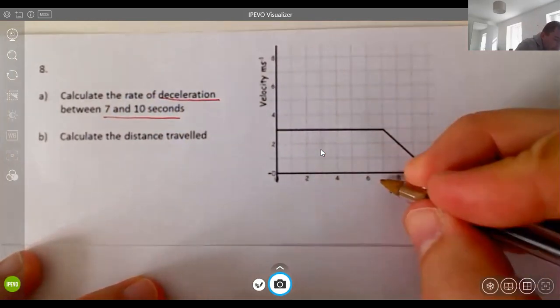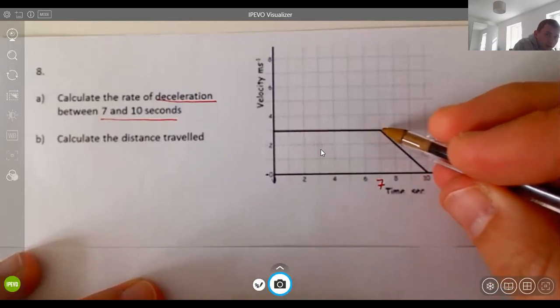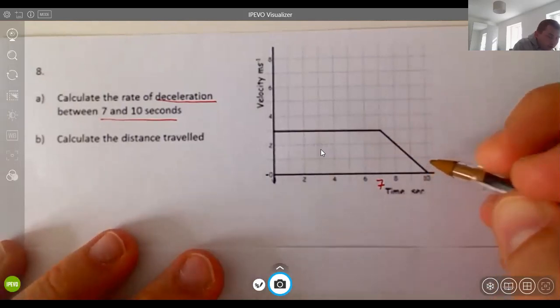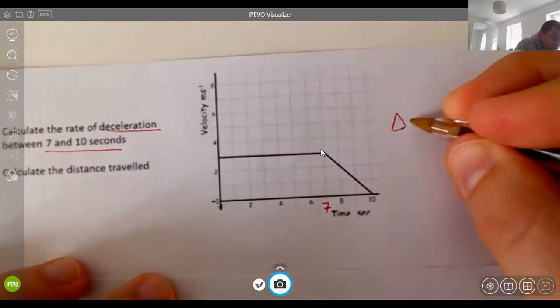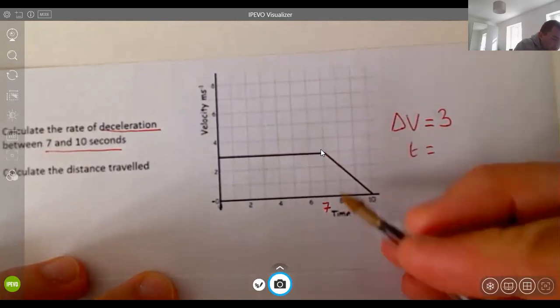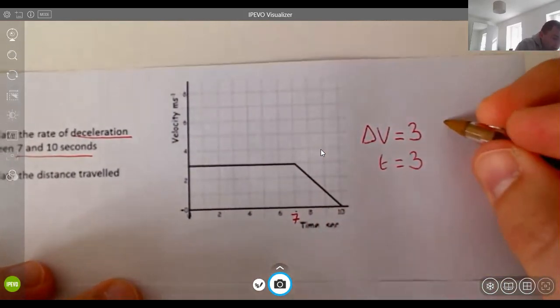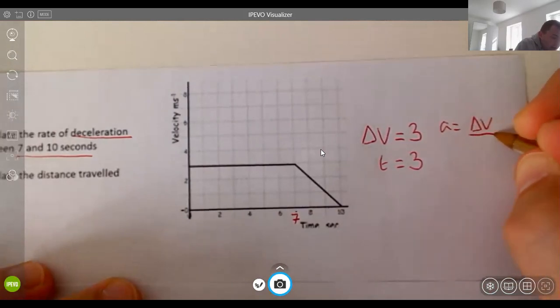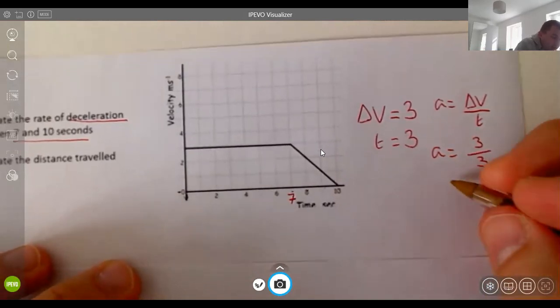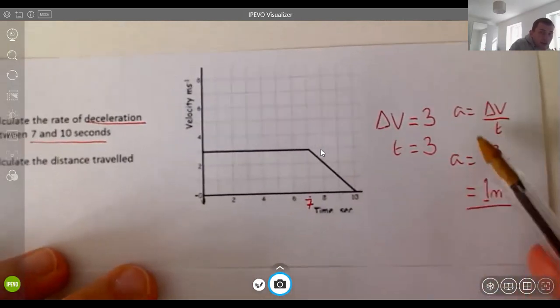It says calculate the rate of deceleration between 7 and 10 seconds. Now if we look, here is 7 and there is 10. So we can see they've gone from 3 meters per second all the way down to zero. So the change in velocity is equal to 3, 3 to zero. And the time taken is 3. Now if you remember from the last lesson, the acceleration is equal to change in velocity divided by time. Acceleration will be equal to 3 divided by 3. So the answer is 1 meter per second squared. So again, you're doing the gradient using the equation. It's stuff you've done before.